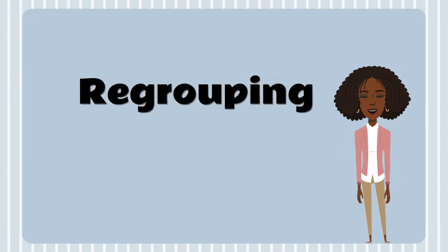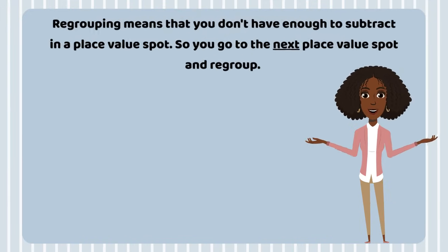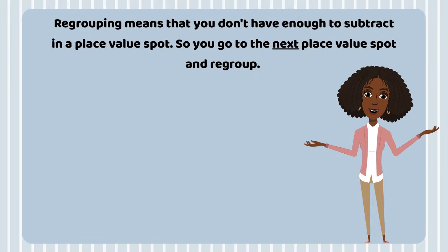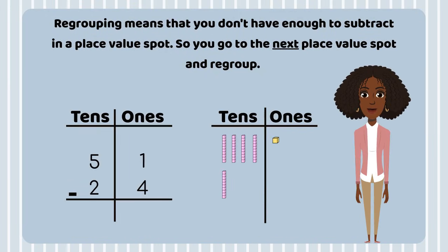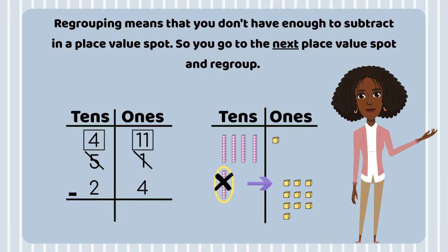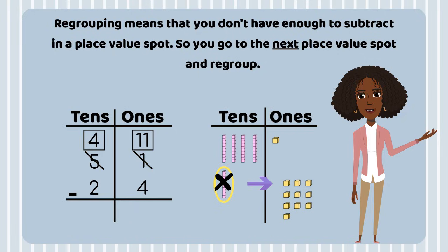First, let's talk about the word regrouping. Regrouping in subtraction means that you don't have enough to subtract in a place value spot, so you have to go over to the next place value spot and regroup. This means you'll go to the tens place, take a ten, and move it into the ones place. When the ten is moved into the ones place, it will be broken down into ten ones. Once you move the ten into the ones place, you'll have enough to subtract.